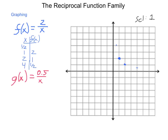The reverse is also true. If we put in negative one-half, we get all the same values just with opposite sign: negative one-half gives negative 4, negative 1 gives negative 2, negative 2 gives negative 1, and negative 4 gives negative one-half. So we get a graph that has a vertical asymptote, then picks back up on the other end of the number spectrum. Each of these two pieces are called branches of the graph.